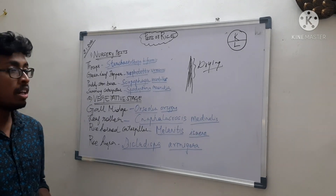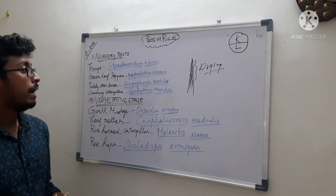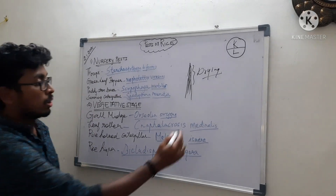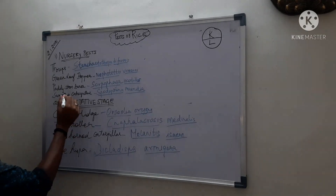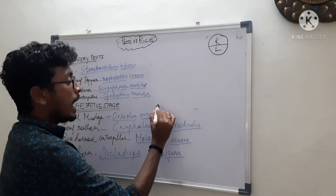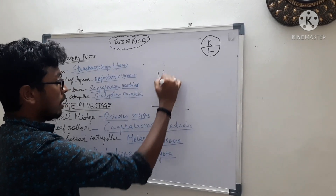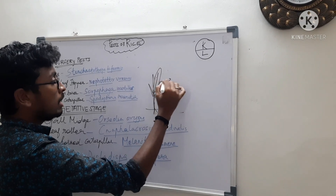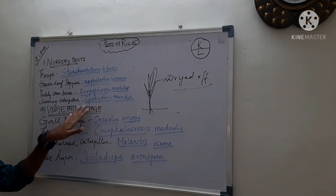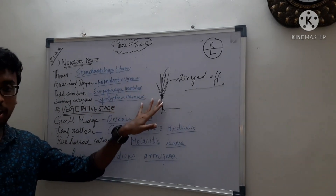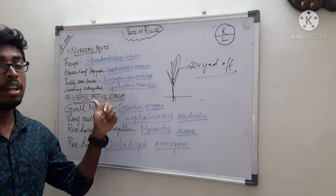Next is paddy stem borer. It is also present in both the main field and nursery. In the nursery condition, if rice crop is growing, the growing tip starts drying and dies off. The further growth of the paddy plant is generally stopped. This is the main characteristic symptom and it is a major threat in the nursery condition.